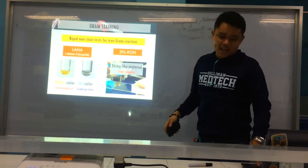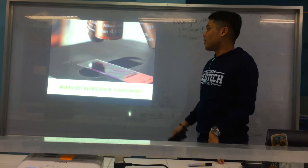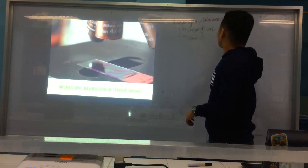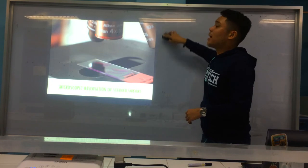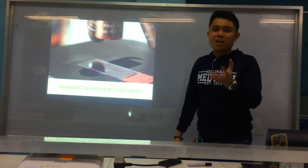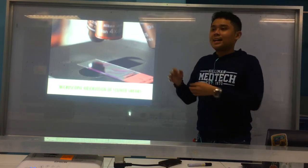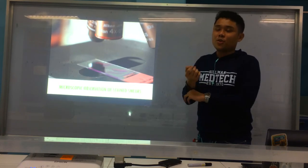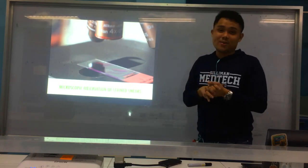That's all for gram staining — quite a lengthy discussion. For the next part, after staining, we'll now examine it under the microscope. So basically it's a review again from intro to micro — the different types of microscope and how we report results. That's for the next video.